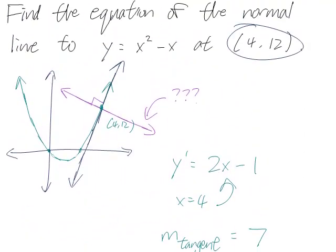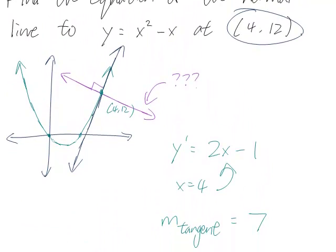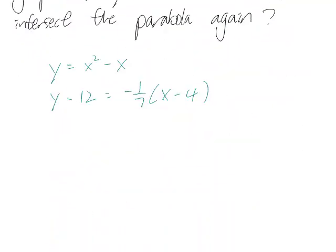So basically, now we just have to solve these two equations simultaneously to find the points of intersection. One of them, obviously, is going to be (4, 12), because that's where the normal line originated from.